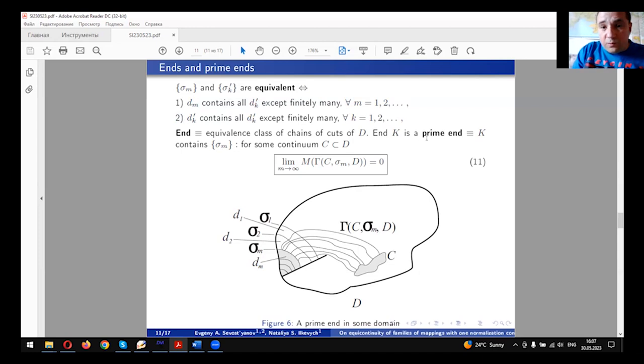An equivalence class of chains of cuts in D is called prime if the following modulus condition (11) holds for the chain σ_m and for any, or equivalently for some continuum C. Continuum in this report is a connected compact set, non-empty compact set. If the modulus of families of paths of this triple tends to zero, this end is a prime end.